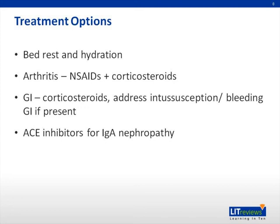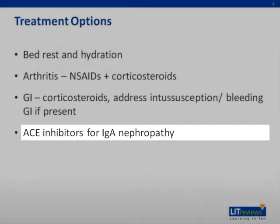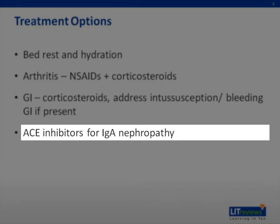There are limited recommendations concerning the treatment of HSP nephritis. Of note, previous randomized controlled trials and meta-analyses have shown that the use of prednisolone does not reduce the prevalence of renal disease following HSP. Therefore, corticosteroids are not recommended for this purpose. However, ACE inhibitors have been shown to decrease proteinuria and slow the progression of renal disease in IgA nephropathy. Since IgA nephropathy and HSP nephritis have similar pathogenesis, the use of ACE inhibitors can be considered here.